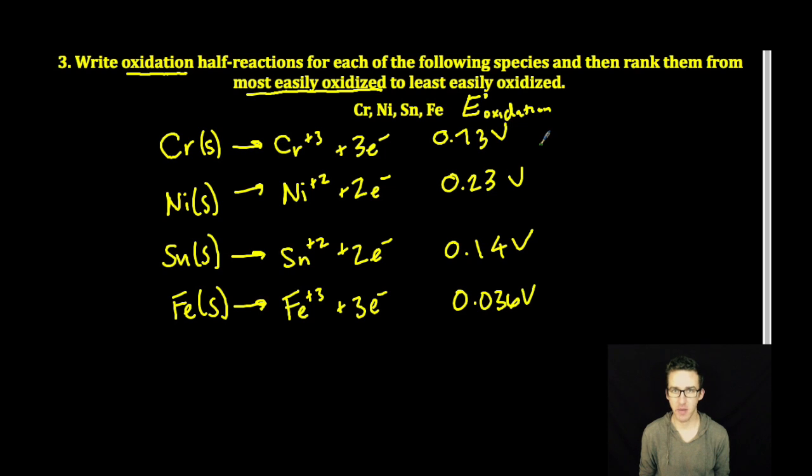Now, as we rank these from most easily oxidized to least easily oxidized, chromium is going to take the number one spot, followed by nickel, followed by tin, followed by iron.